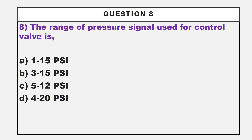This is one of the simple and important questions related to instrumentation. The correct answer is option B, 3 to 15 psi. Please remember the range of pressure signal is 3 to 15 psi, and the range of current signal is 4 to 20 milliamps. PSI is the unit for pressure and implies pound force per square inch.